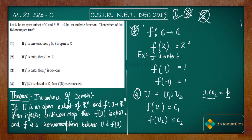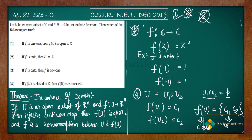With this construction, f(U) = {c₁, c₂}, which is a finite set. A finite set is closed in ℂ. However, it is not connected — it consists of two isolated points. So f(U) is closed but not connected.